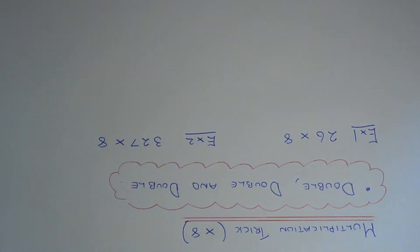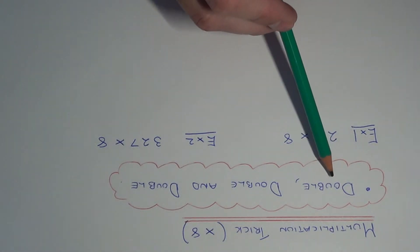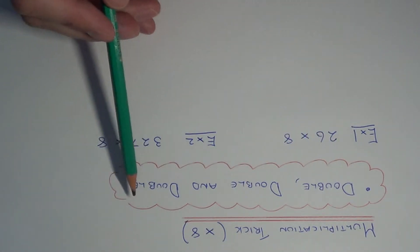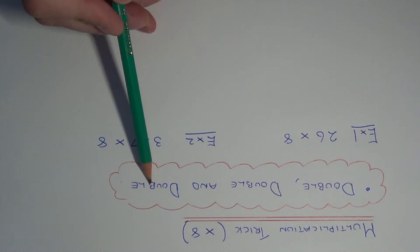Today I'm going to show you a multiplication trick for multiplying by 8, so you don't need to know your 8 times tables. The little trick you need to remember is you double the number, then double the number again, and finally double it for a third time.